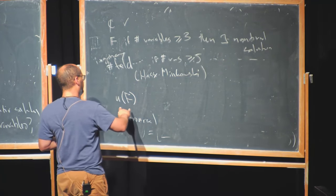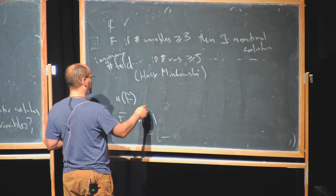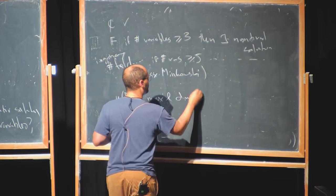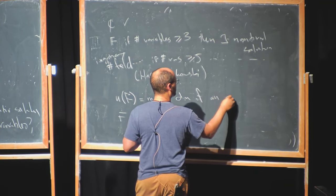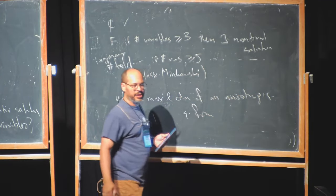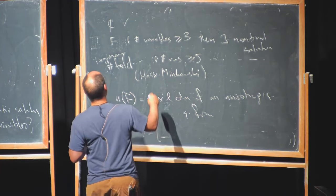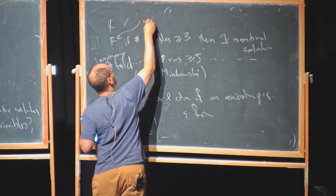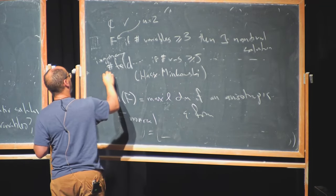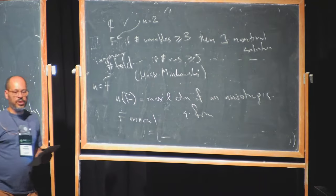In general, we say the u-invariant of a field — say if F is so-called non-real, meaning it doesn't have any way of being ordered by a notion of positives and negatives — the u-invariant is the maximal dimension of an anisotropic quadratic form, where anisotropic means there are no non-trivial solutions to it being equal to zero. For a finite field the u-invariant is two; for an imaginary number field the u-invariant is four.